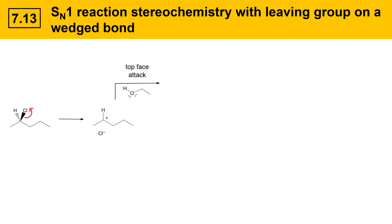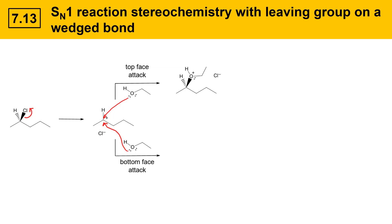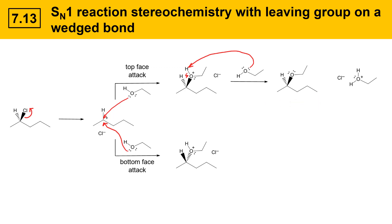We're going to look at top face attack first. When the nucleophile attacks from the top face, it gets delivered with a wedged bond orientation. The result is the following intermediate. When the nucleophile attacks from the bottom face, the result is opposite — the nucleophile is delivered with a dashed bond orientation. The result is two products that are mirror images of each other. When the top product is deprotonated, the resulting neutral species is shown here along with an acid-base product. This is the retention product — it's called retention because the nucleophile was delivered from the same face as where the leaving group left from. In the starting material, the chlorine is on a wedged bond, and in the product, the nucleophile is on a wedged bond as well.